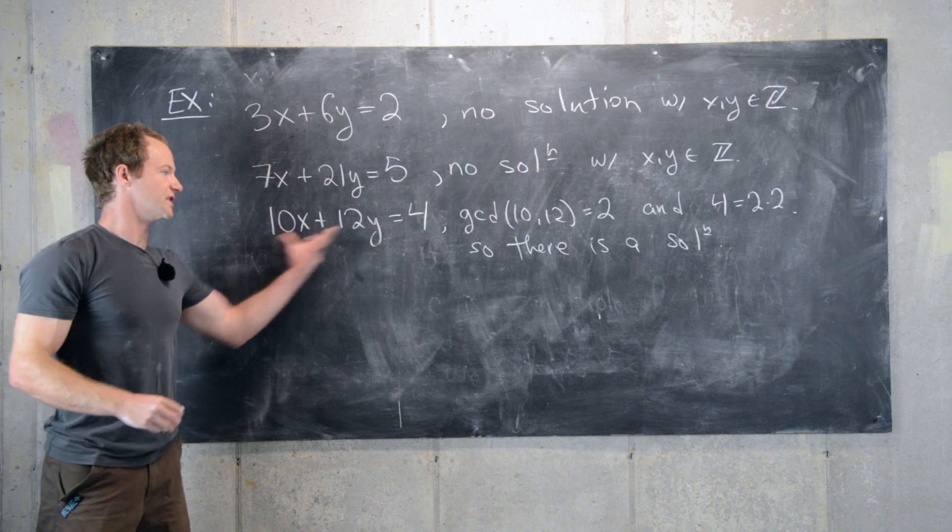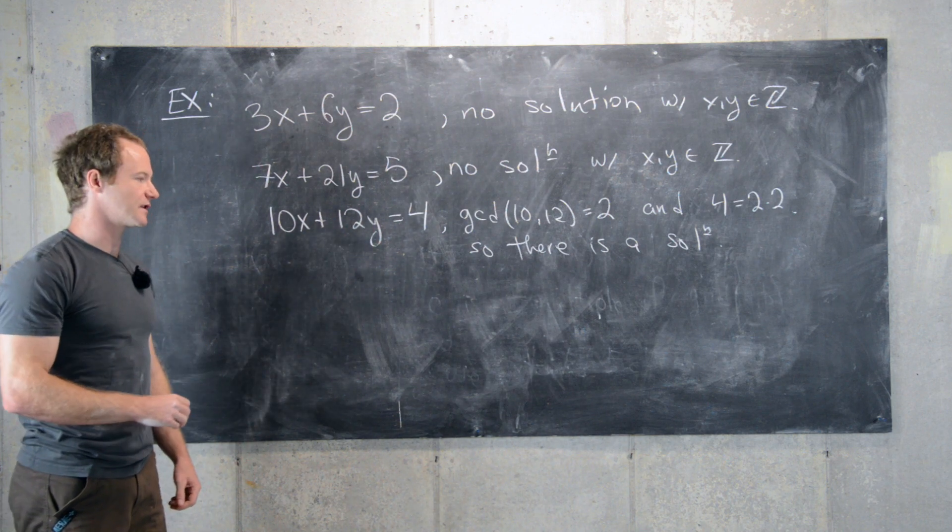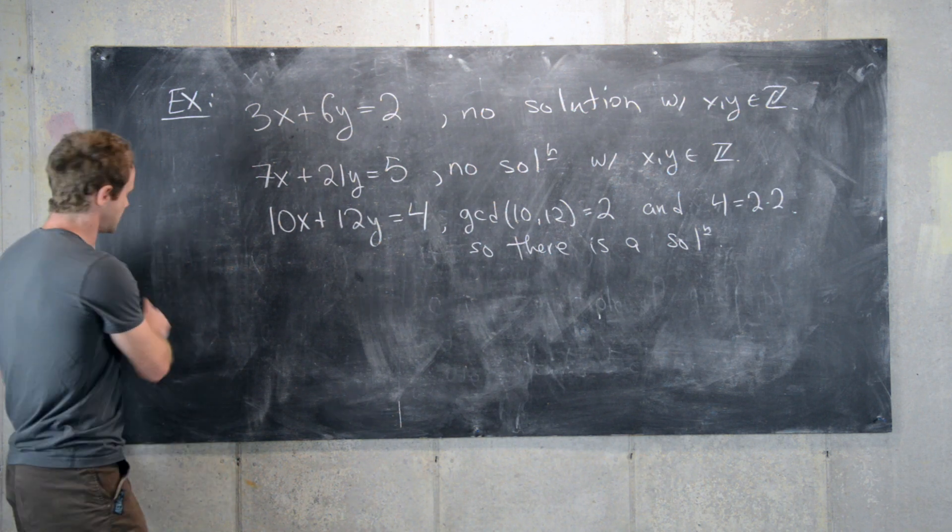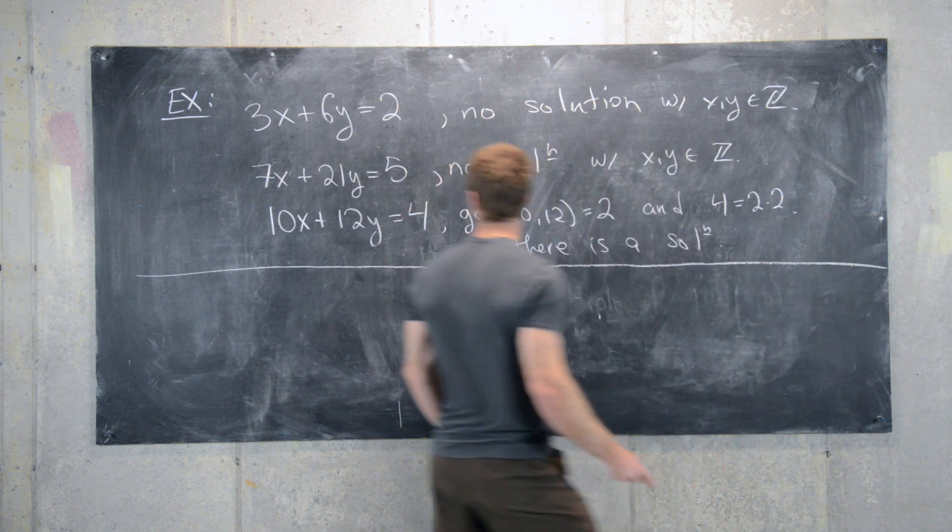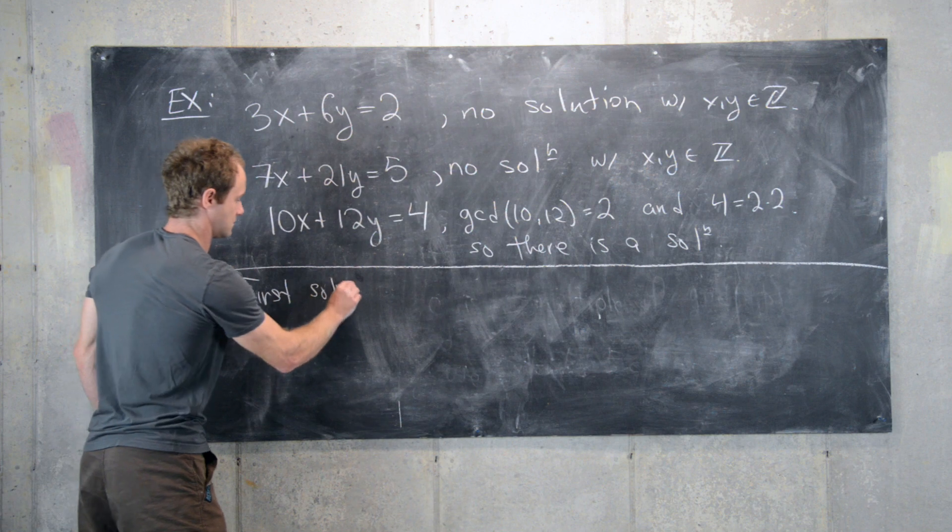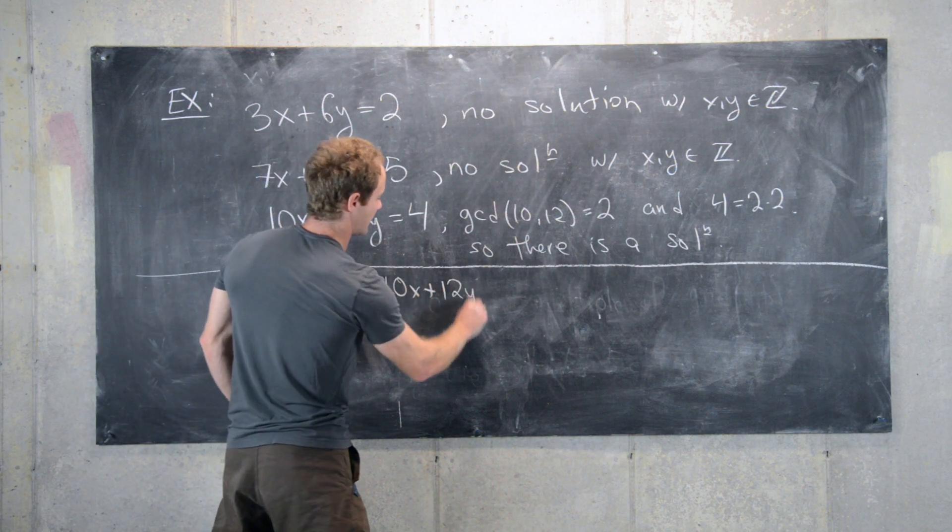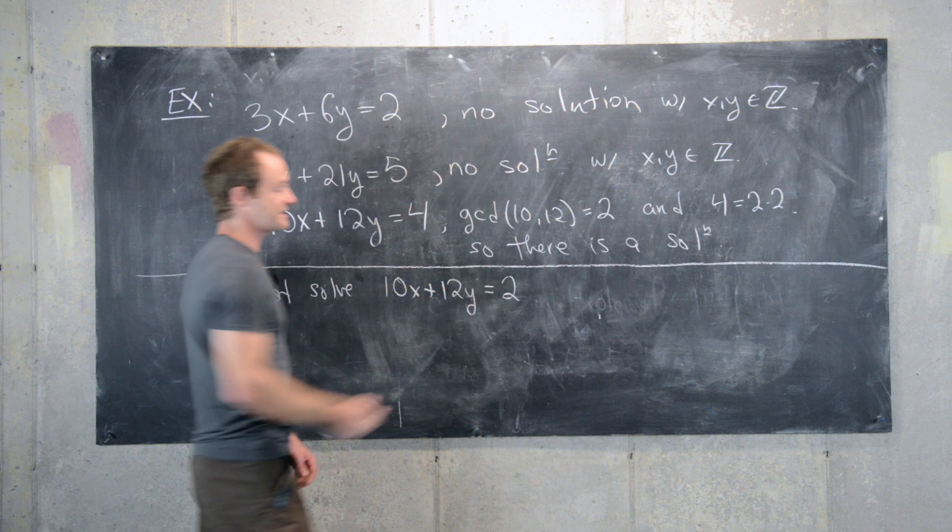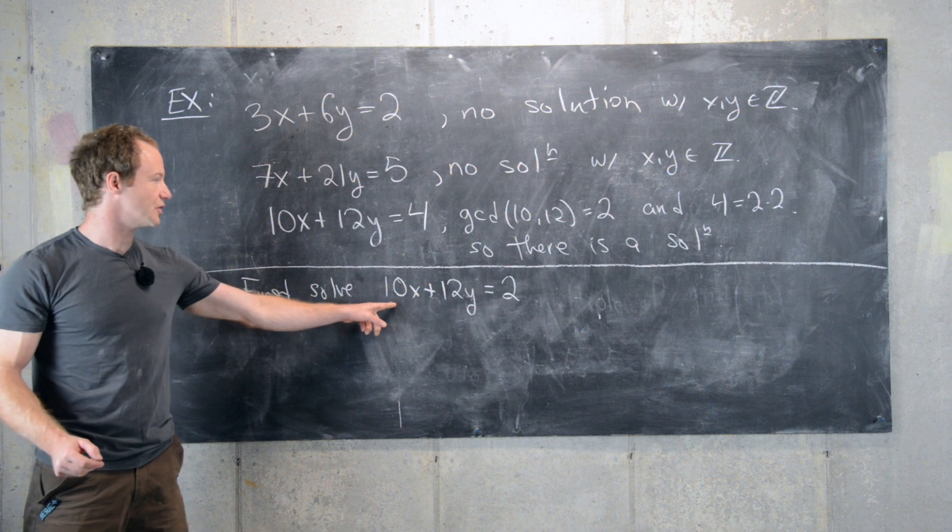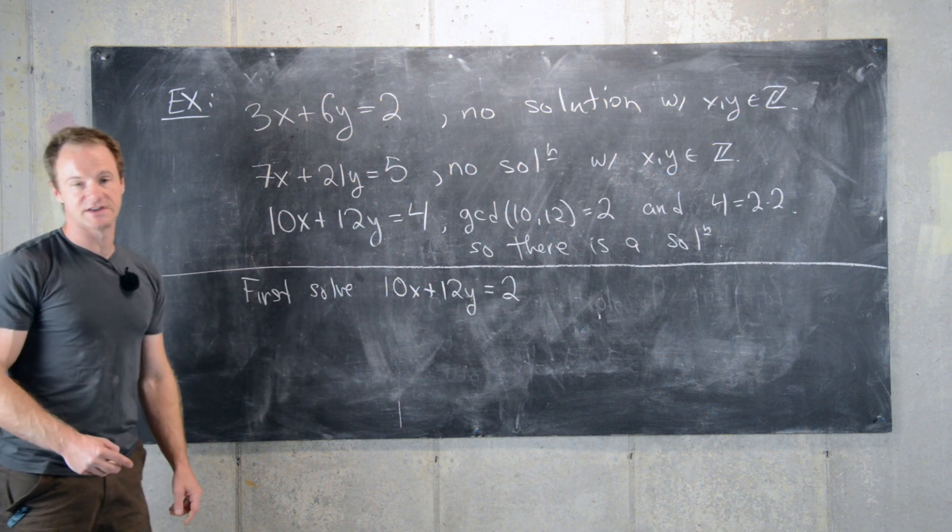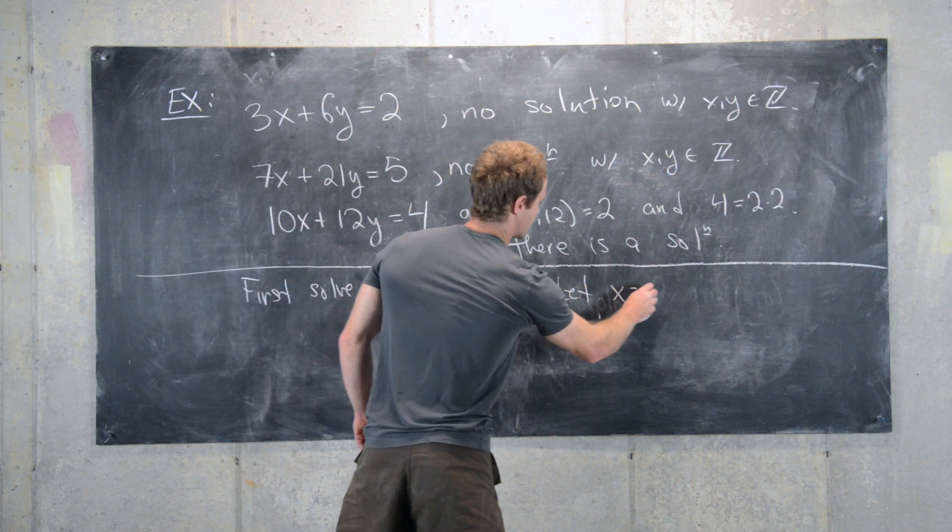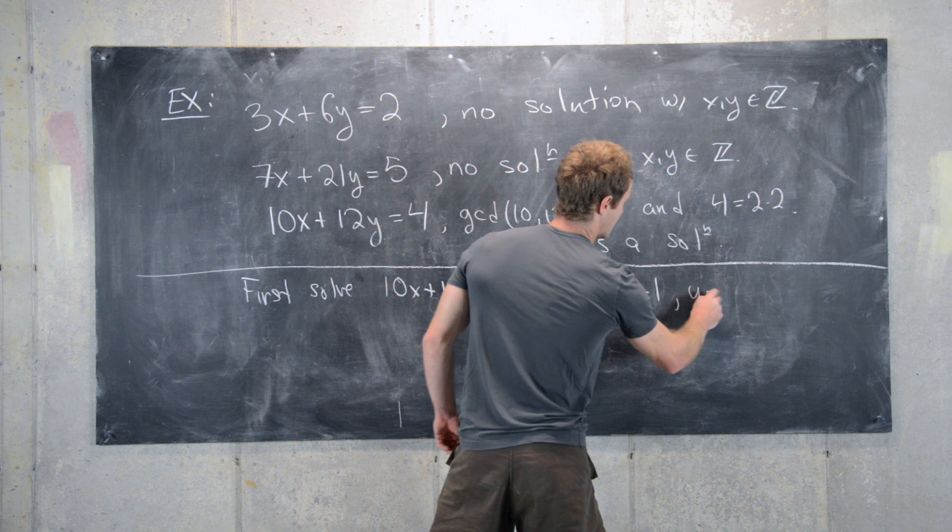Let's go ahead and find the solution. Obviously we can do something like the extended Euclidean algorithm, but since these numbers are pretty small we can guess the solution and check it. Let's first solve 10x plus 12y equals the gcd. Then notice if we solve this equation, we can multiply it by 2 and we've solved this equation.